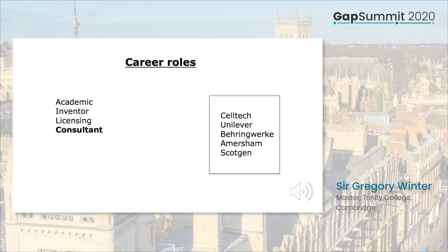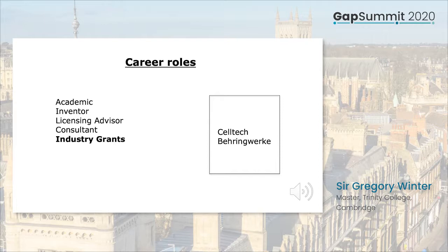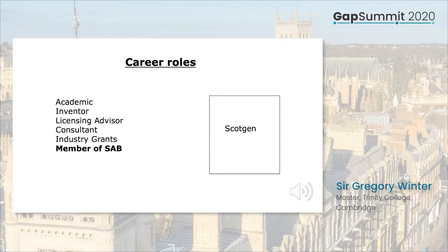Two of the companies, Celltech and Behringwerke, also wanted to collaborate on the early stages of development of humanized antibodies and funded research in my laboratory. So I became experienced in getting industry grants. I was also invited by ScotGen, a small biotechnology company based in the Department of Genetics at Aberdeen, to join their scientific advisory board. The advisory board met with senior management and sometimes investors, so I began to get a feel of how startup companies work.